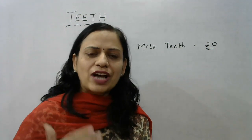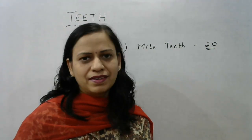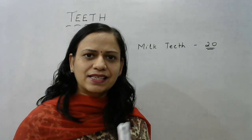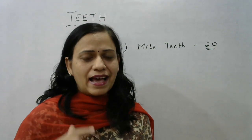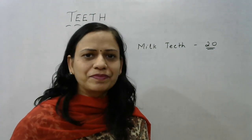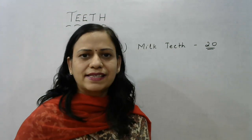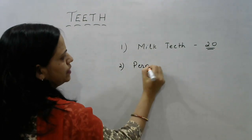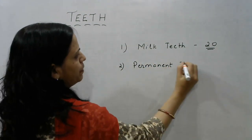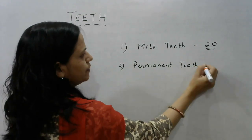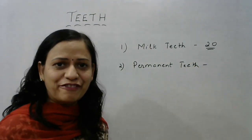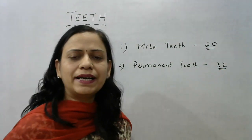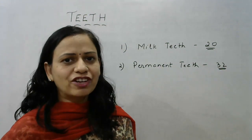As the child grows further, after around eight or nine years of age, these teeth start falling off and slowly the set of milk teeth is replaced by a set of permanent teeth. So the second set of teeth that appears is known as the set of permanent teeth. And the number of permanent teeth we have is 32.